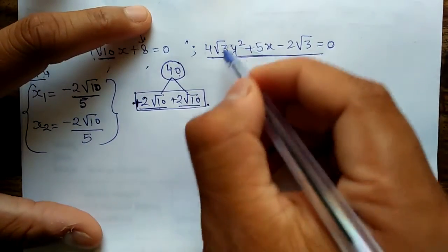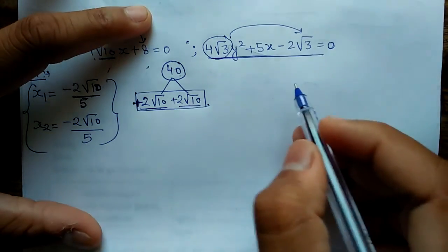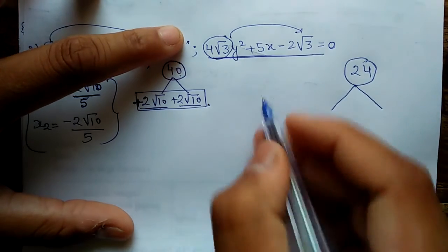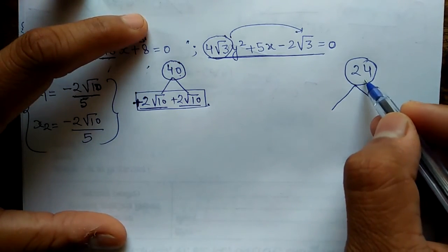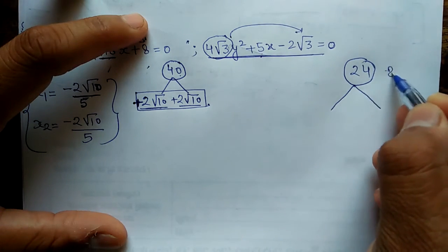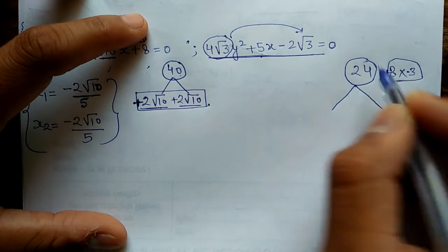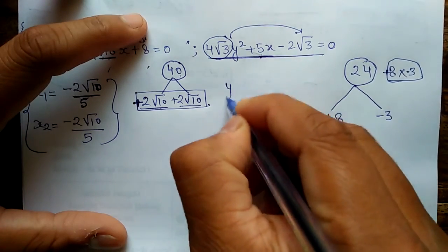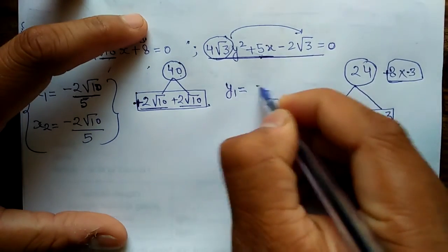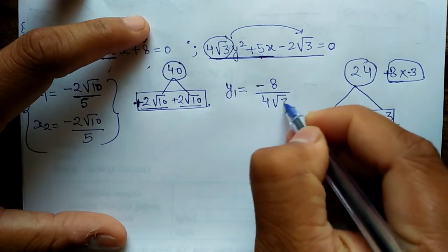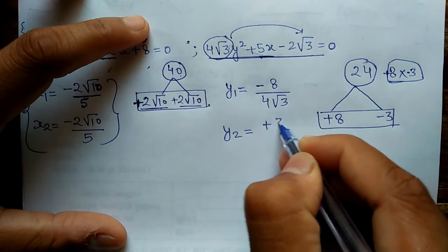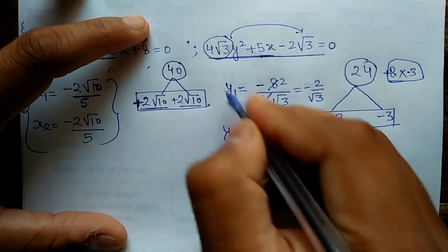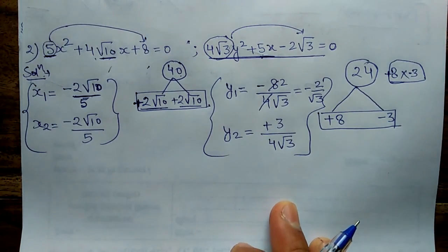Now we find the roots of the second equation. Multiply the coefficient of y² by the constant: 4 × 3 = 24 — wait, that gives 24. Now divide 24: it can be written as 8 × 3. Taking 8 as positive and 3 as negative gives +5. So y₁ = −8 divided by the coefficient of y², which is 4, with √3 — giving minus 2/√3. And y₂ = +3 divided by 4√3, simplifying to 3/(4√3). Now you can easily compare the roots and choose the correct option.